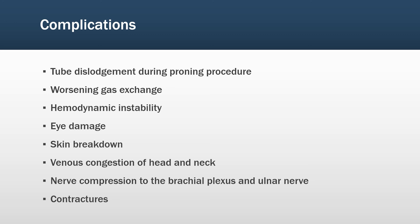Venous congestion of the head and neck can be addressed with a reverse Trendelenburg position, as well as Q2 head turns. Nerve compression is typically related to the positioning of the arms — we position the arms in what's termed a swimmer's position, which helps remove pressure on the nerve area, and this is also done Q2. We also typically get physiotherapy and occupational therapy to consult to make sure positioning is optimal. Finally, contractures, also related to positioning, are addressed — PT will often come and perform passive range of motion as well as continued Q2 positioning.